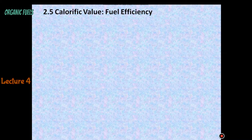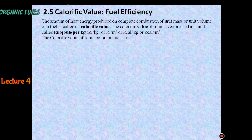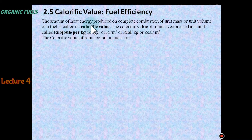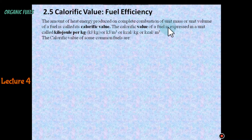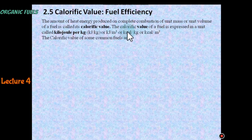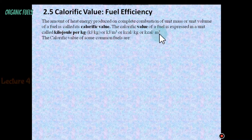What is the meaning of calorific value? It is the amount of heat energy produced on complete combustion of unit mass or unit volume of the fuel. It is called calorific value. The calorific value of fuel is expressed in units called kJ per kg. Or if the fuel is in liquid or gaseous form, then we use kJ per m³.